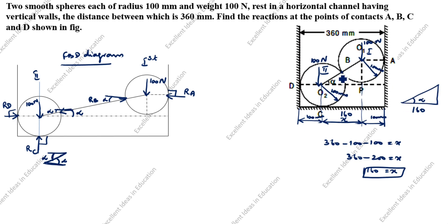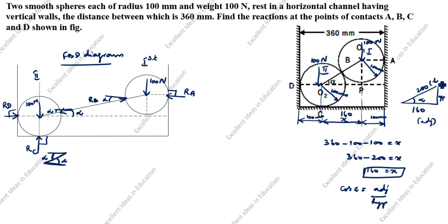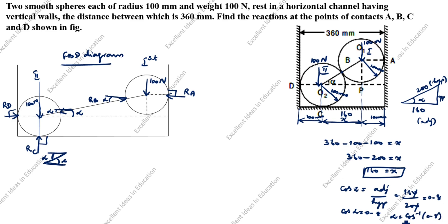Using trigonometry: cos α = adjacent / hypotenuse = 160 / 200 = 0.8. Therefore, alpha = cos⁻¹(0.8) = 37 degrees. We now write alpha equal to 37 degrees on the diagram.